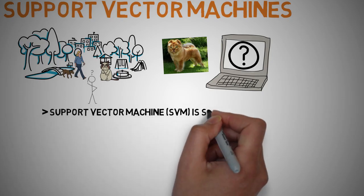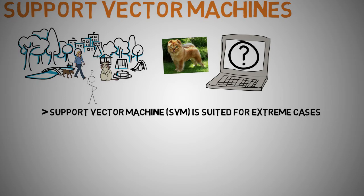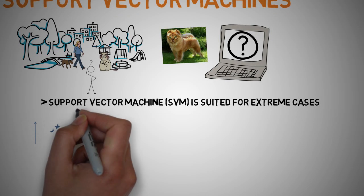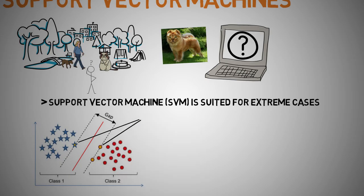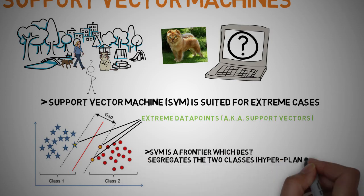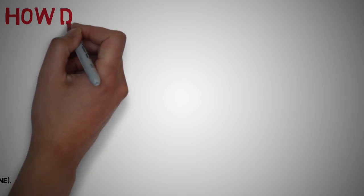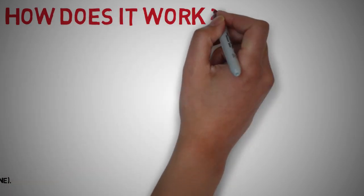It looks at the extremes of the data sets and draws a decision boundary, also known as a hyperplane, near the extreme points in the data set. So essentially, the support vector machine algorithm is a frontier which best segregates the two classes. So how does it work?